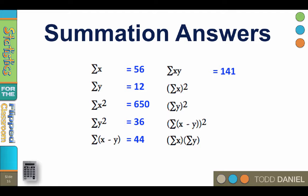Once we have the sum of each column, we can also work some math on the sums. We could square the sum of x. This is called the sum of x quantity squared, to distinguish it from the sum of x squared. The sum of x, we already know, is 56. So 56 squared is 3136. Can you figure out how to calculate the sum of y quantity squared? 36 squared is 144.